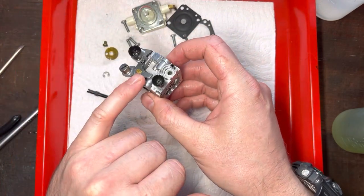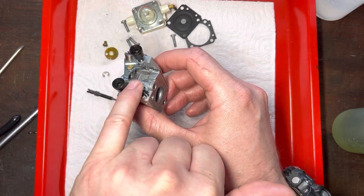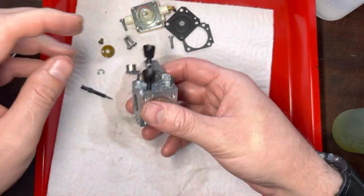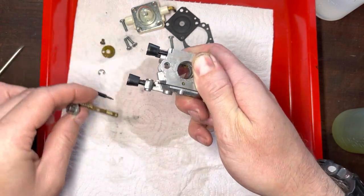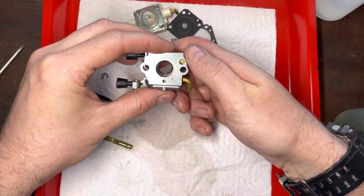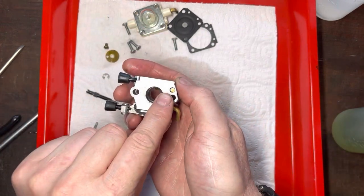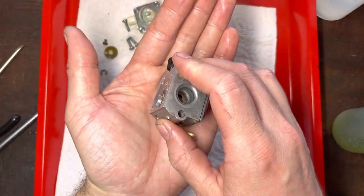Take note of where the springs connect and land and sit on the carb. There's one on the shaft and one on the body and then just gently wiggle that shaft out and your accelerator pump's under my thumb. Tap that out into your hand and you'll have a pump, a spring and a little screen.